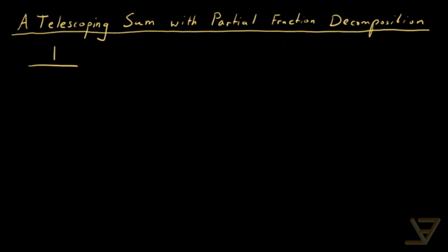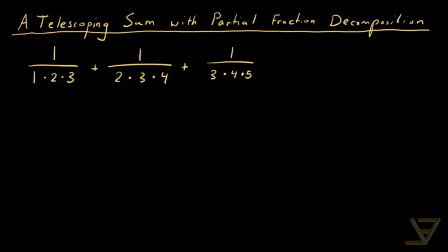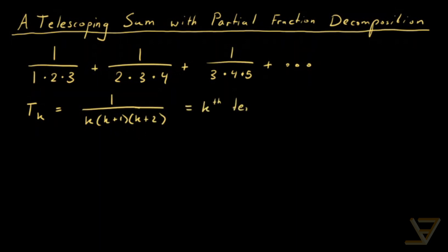The series is 1 over (1·2·3) plus 1 over (2·3·4) plus 1 over (3·4·5), off to infinity, where the general term — let's call it t_k — is 1 over k(k+1)(k+2). That is the k-th term, and we'll go from term 1 all the way through to infinity.